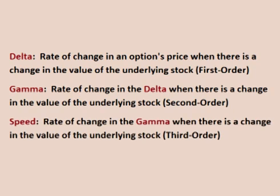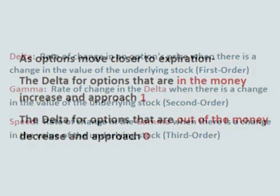In addition to the delta changing when the price of the underlying stock changes, the gamma changes as well. The rate of change in gamma when the price of the stock changes is known as speed.